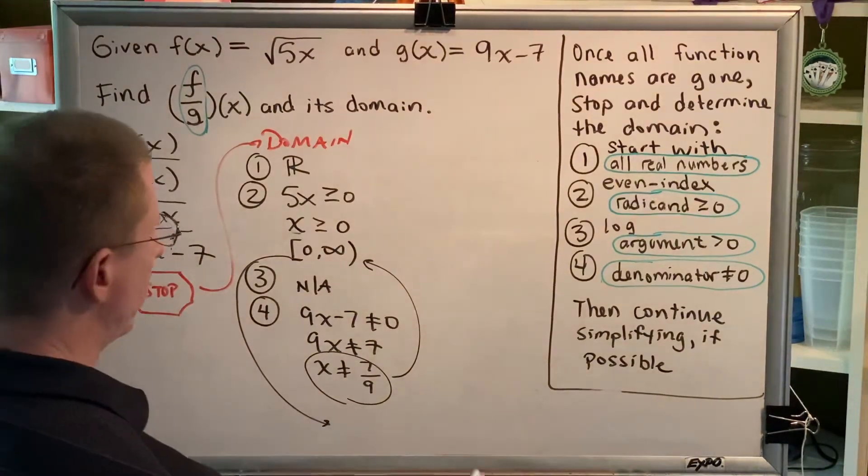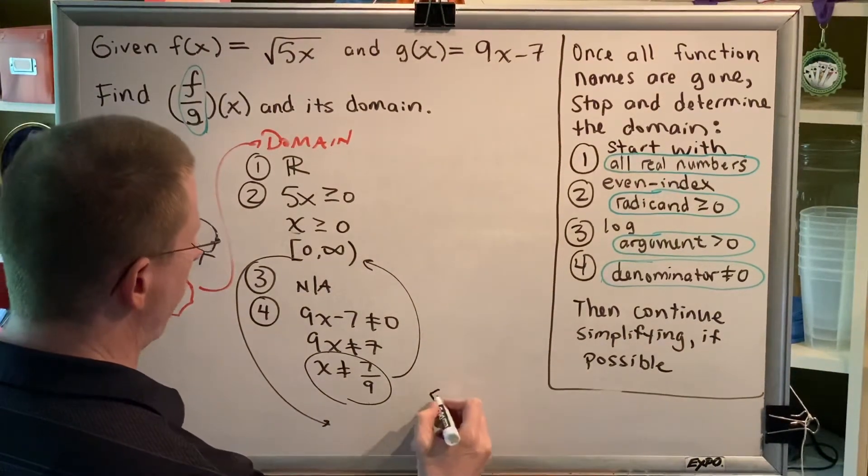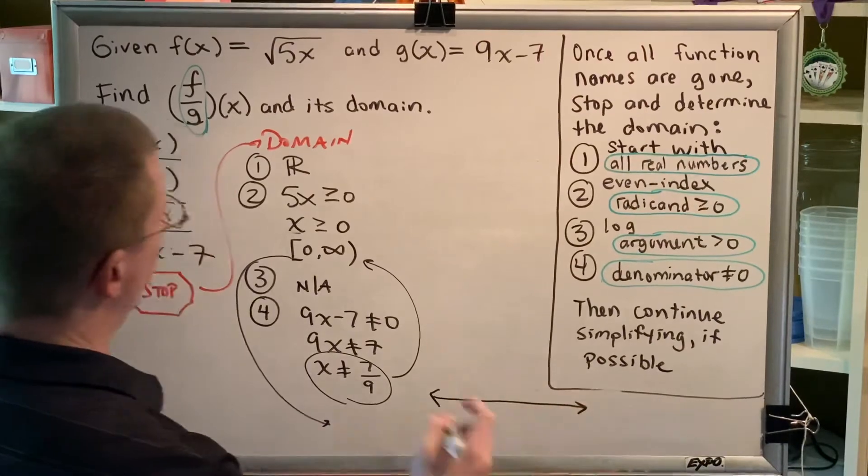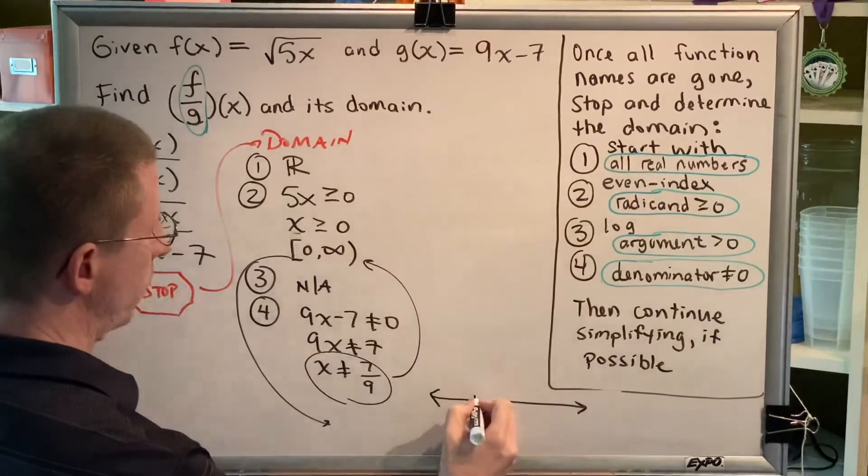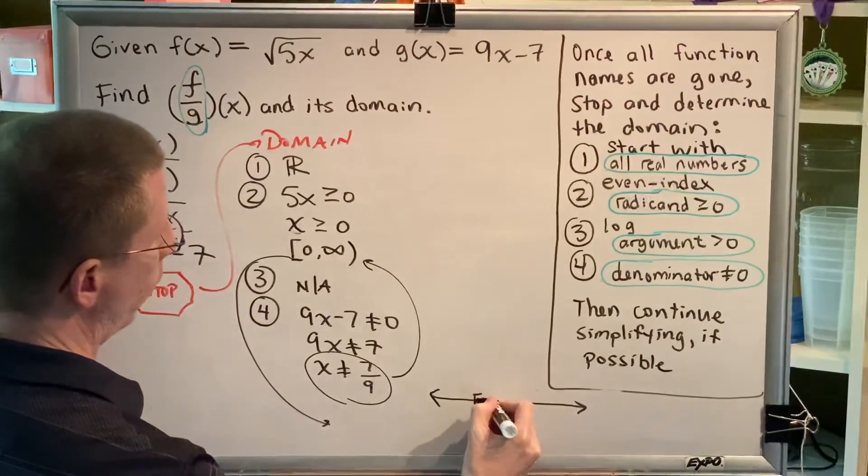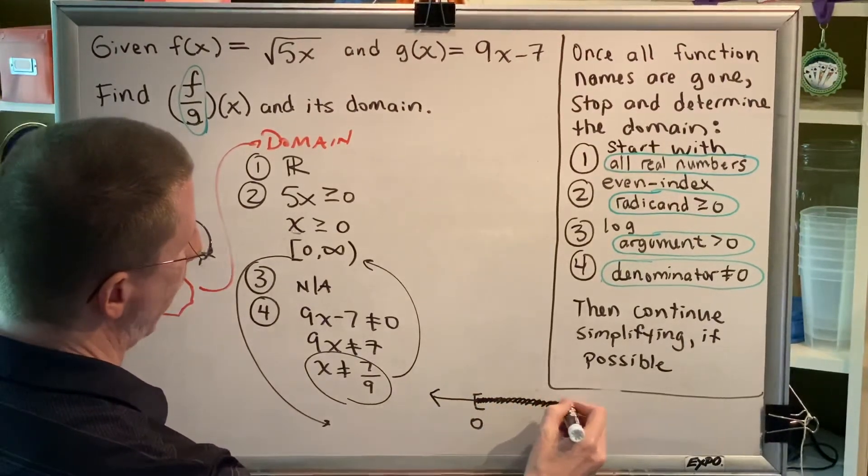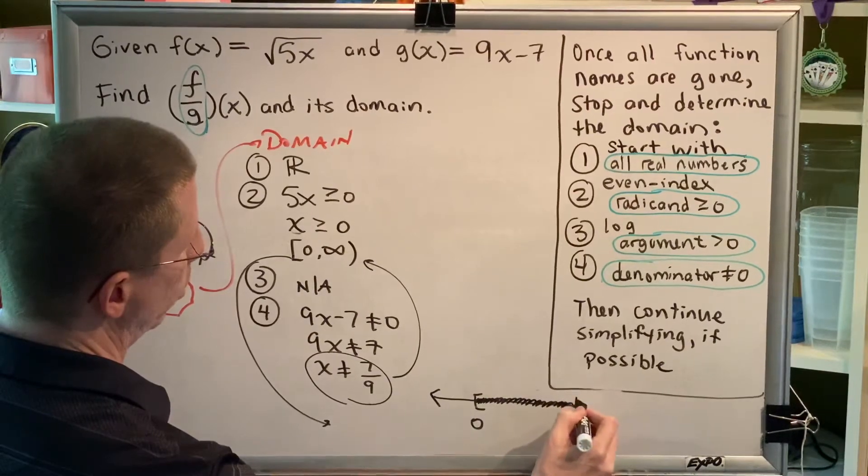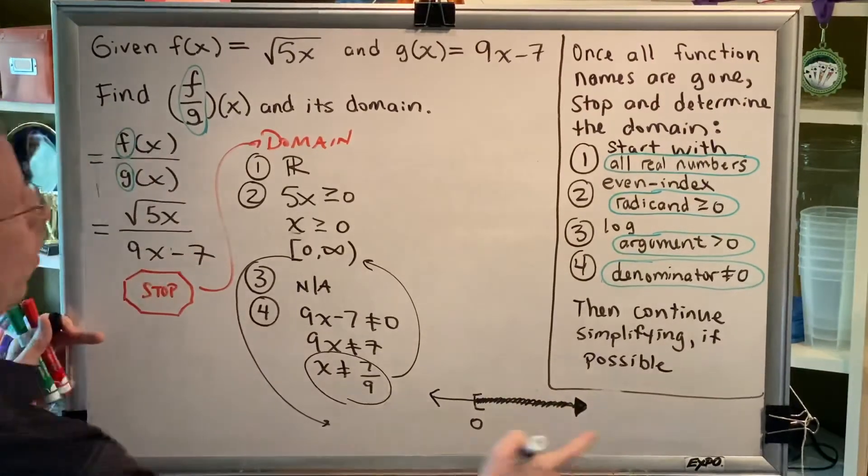Let's look at a number line because I think that will make it a little bit easier for everyone to see. First of all, let's graph the numbers that are from zero to infinity. That would be zero and all of the numbers that are bigger. This is the domain we had at the end of step two.